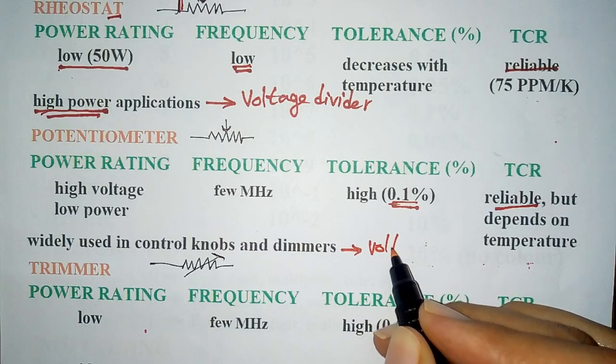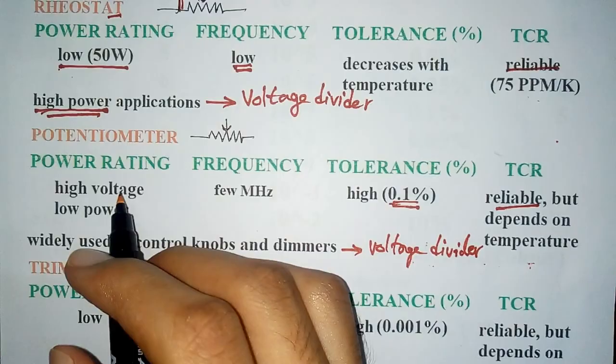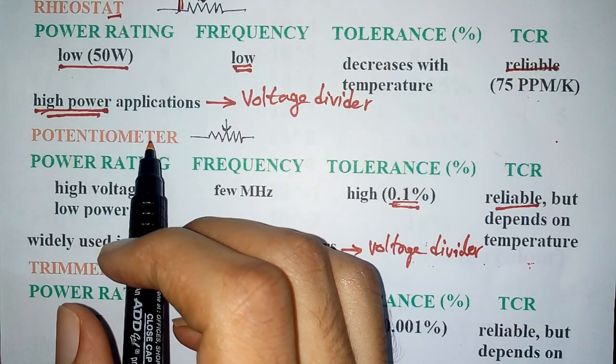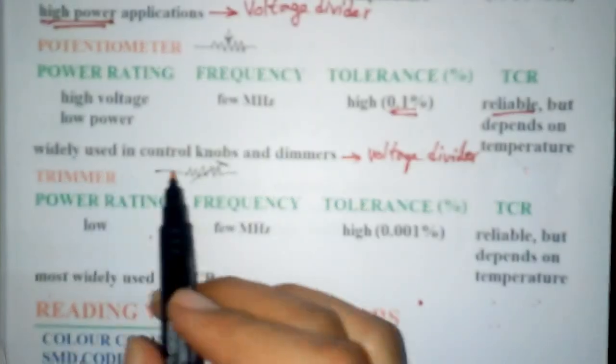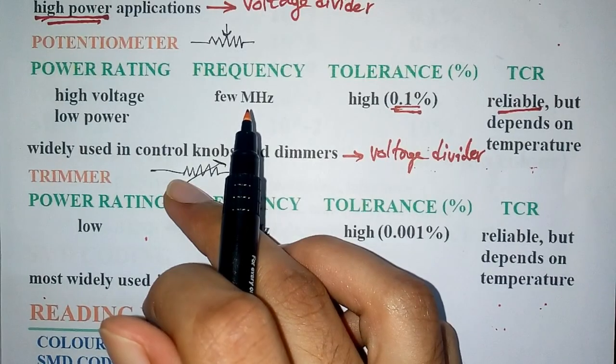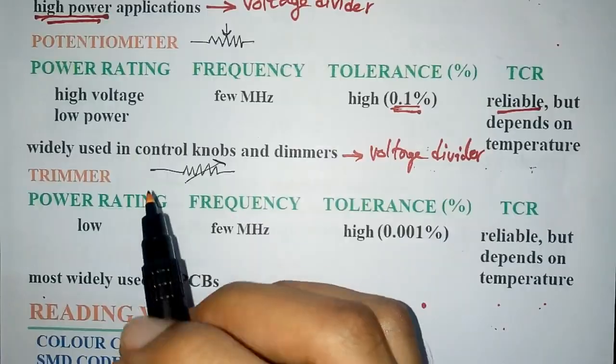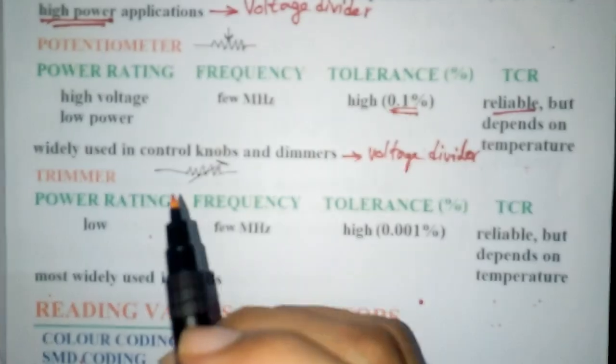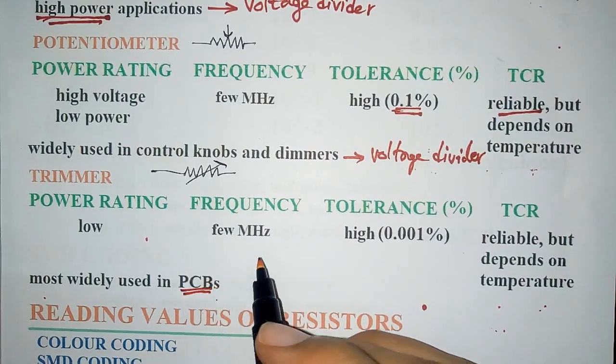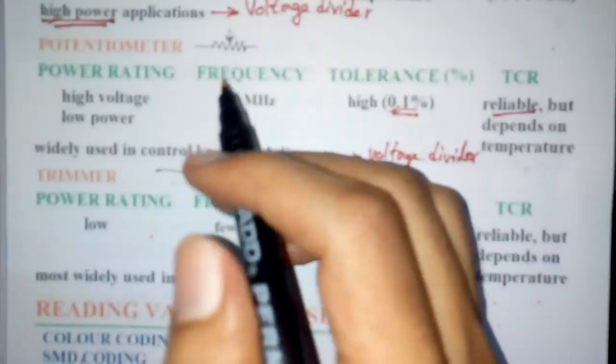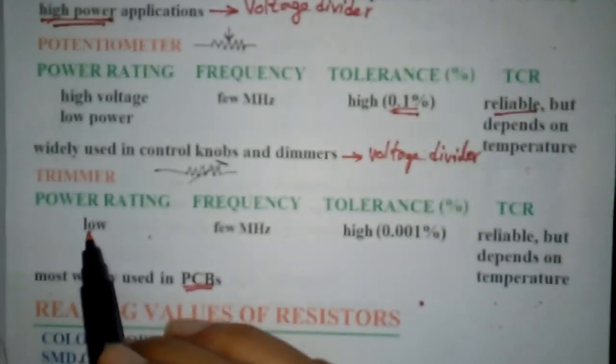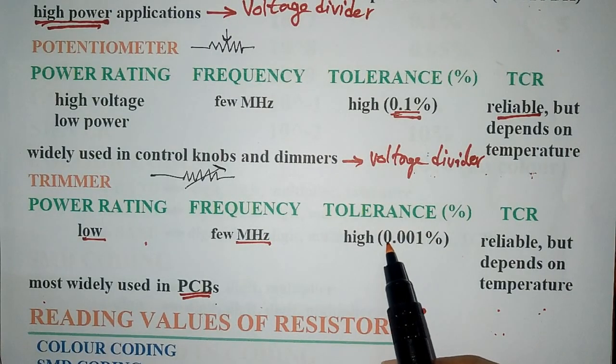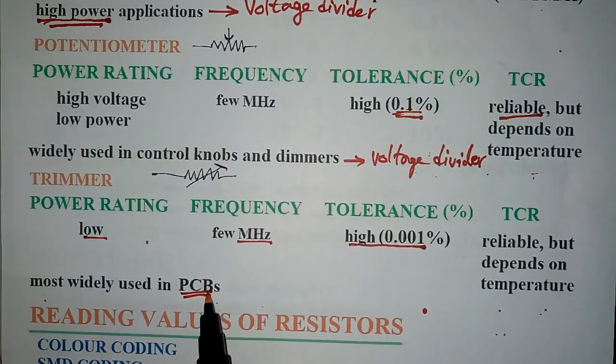Trimmer is a film resistor, more accurately described as miniature potentiometers. They are mainly used in PCBs and serve the same purpose as potentiometers: variable resistors and voltage dividers. Its power rating is low, it has good frequency stability, very high tolerance, and because it's used in PCBs, TCR is reliable.